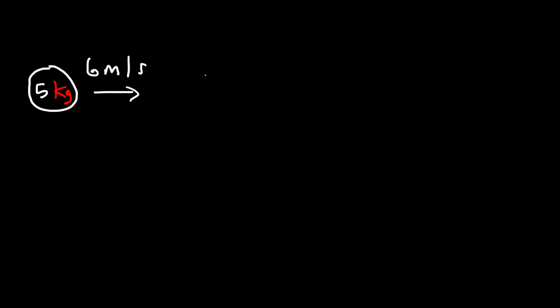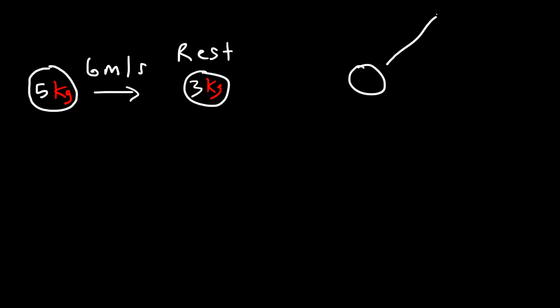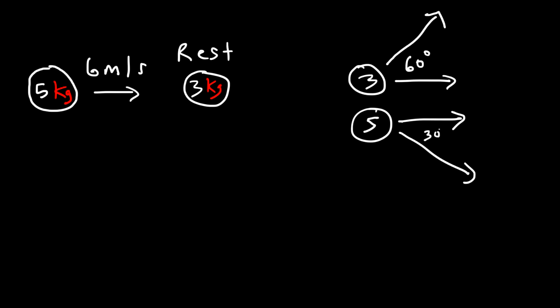Let's say we have a five kilogram ball moving east with a speed of six meters per second, and it strikes a three kilogram ball that is initially at rest. After the collision, the three kilogram ball moves at an angle of 60 degrees with respect to the horizontal, and the five kilogram ball goes 30 degrees below the x-axis. With this information, how can we calculate the final speeds of both balls?